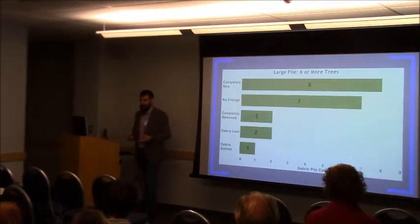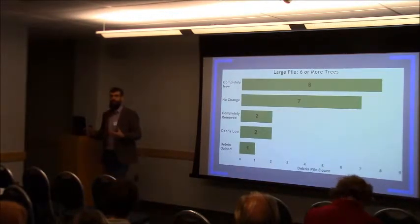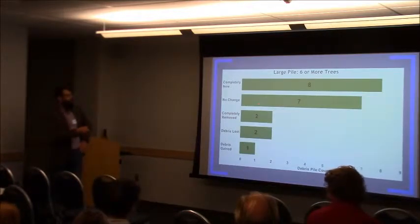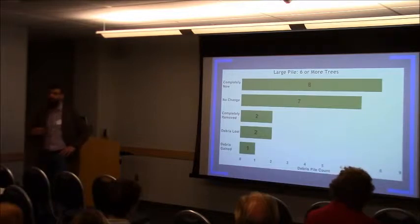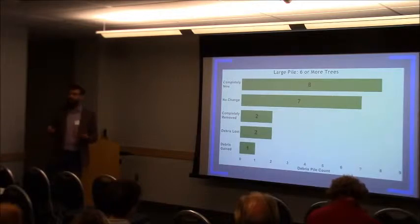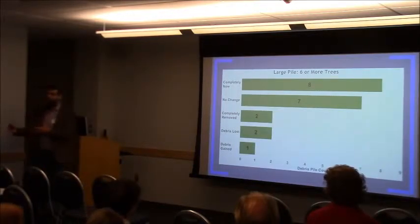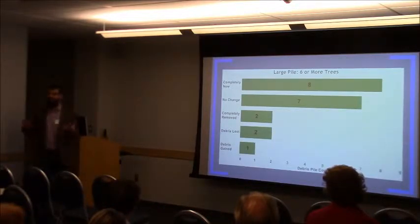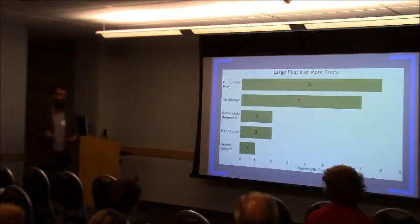The large piles are often more armored — they've got sediment and rocks that are harder to move. We saw eight new very large piles (six or more trees) from the storm, with seven showing no change. This is really informative for the town because they weren't sure how much woody debris comes through that bridge during storms. We think it's probably hundreds of pieces — they need to build a bridge that can sustain that during a major flooding event like Irene.